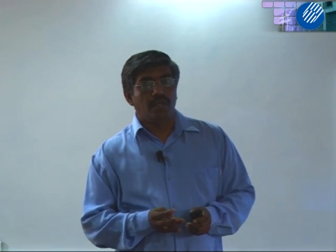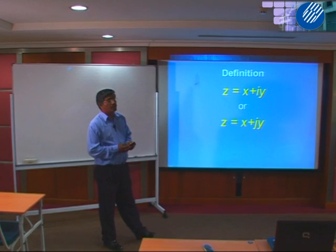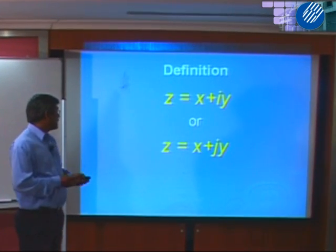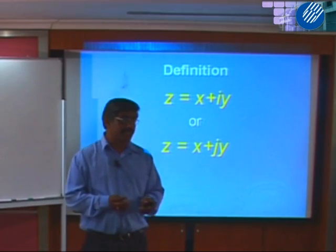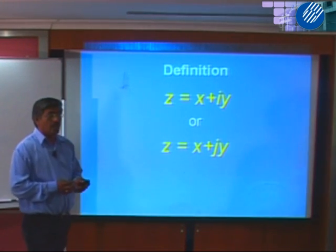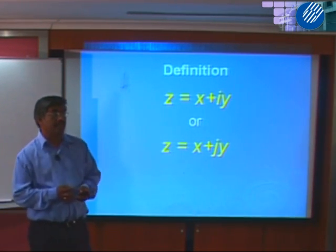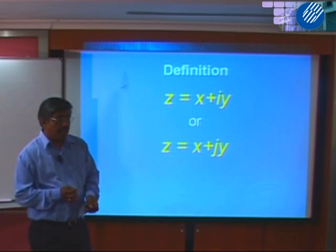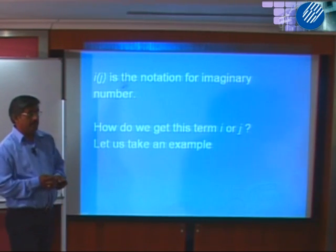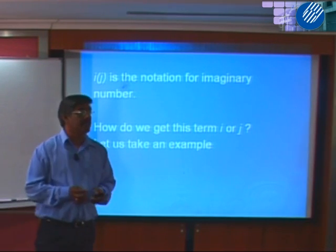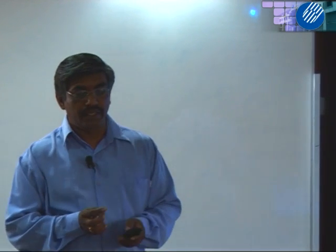Now let us see how we define the complex number. The complex number can be written as z equal to x plus iy, or also as z equal to x plus jy. The i or j is used as one of the symbols here, and the use of i and j has the same meaning. The i or j is represented as an imaginary number. We usually use i in basic mathematics, whereas j is the notation used in the engineering field mainly. So both i and j have the same meaning.